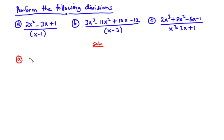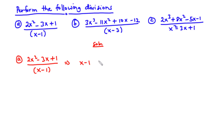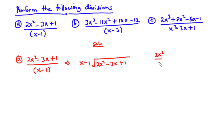So for A, we have 2x squared minus 3x plus 1 divided by x minus 1. Using the method of long division, we place x minus 1 on the outside and 2x squared minus 3x plus 1 inside. To begin, we divide 2x squared by x. Now 2x squared divided by x — we have 2x times x divided by x — x cancels, so we have 2x.